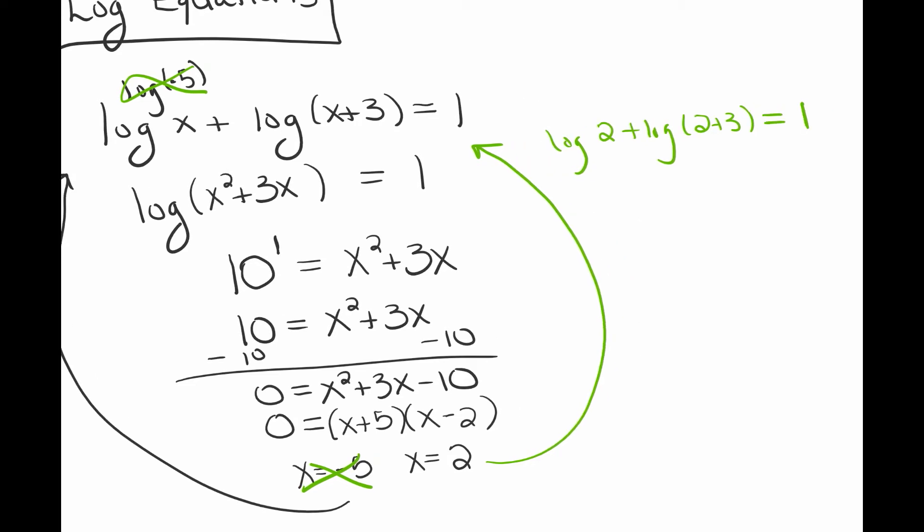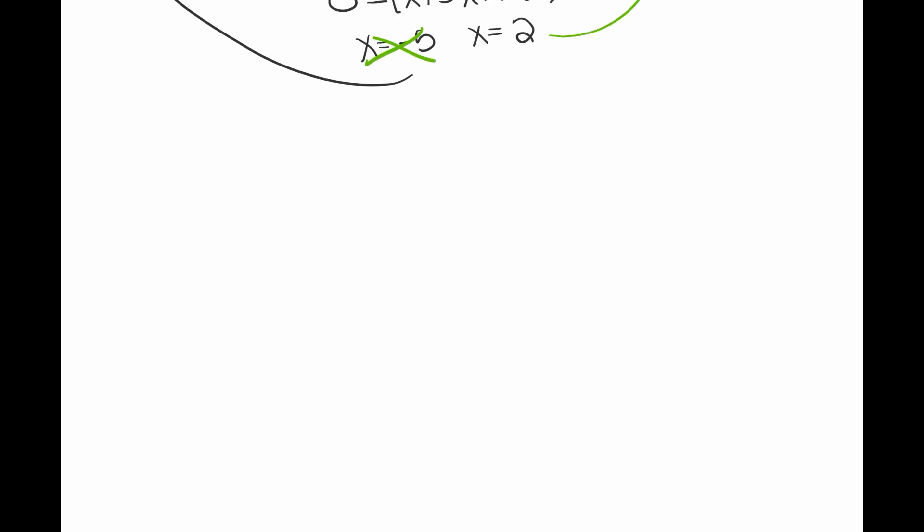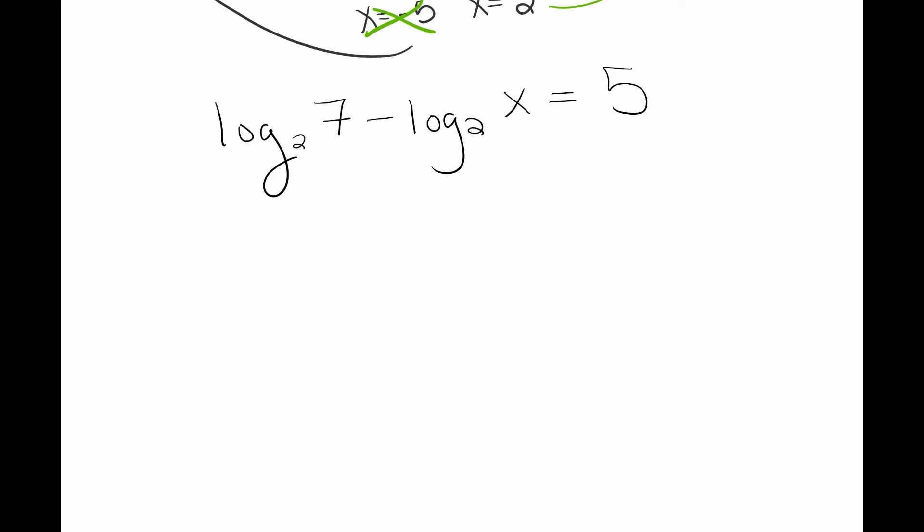When I plug in 2, it's not going to create a situation where I'm taking the log of a negative number, so it's all good. Now let's see another example. Let's say I have log base 2 of 7 minus log base 2 of x, and say that this is equal to 5.